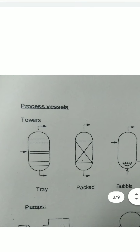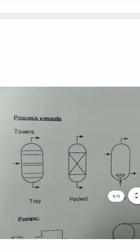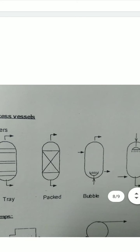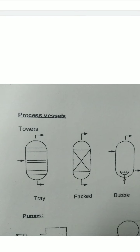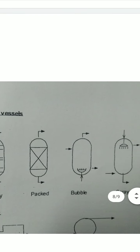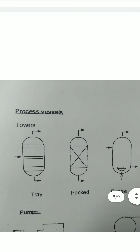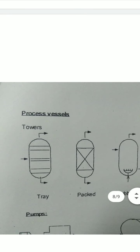Process vessels: in the process there are different types of vessels. These include tray vessel, packed vessel, bubble tower, and spray tower. All these are process vessels. The first is the tray vessel type, then the packed vessel with a small intact packed structure, and then the bubble and spray towers.